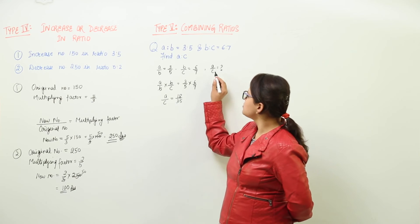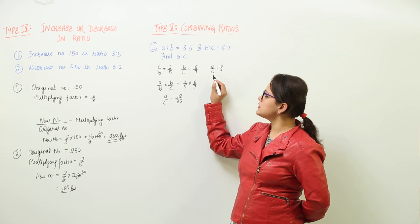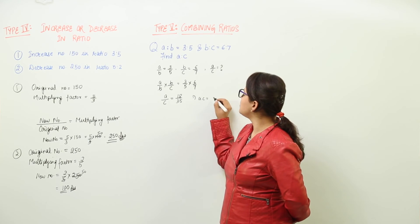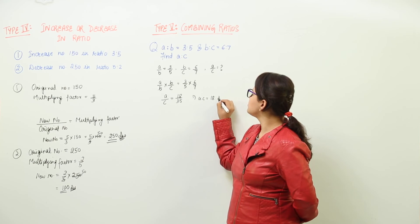So we have got the ratio that we were to find, that is A is to C. Now you can write A is to C is equal to 18 is to 35.